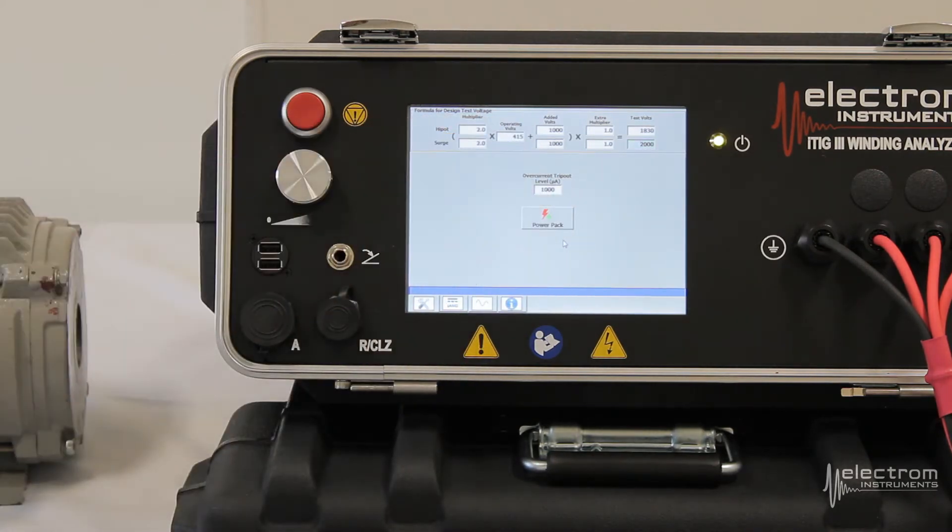Next thing here we have the over current trip out level. So that's essentially a safety feature during the megohm and high pot test. If the leakage current exceeds, in this case 1000 microamps, we'll shut off the test.